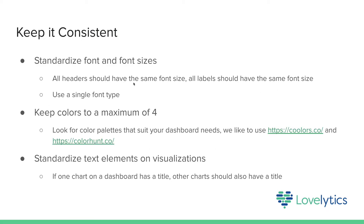Next, remember to keep it consistent. Make sure to standardize font sizes across headers and labels, and keep the number of font types to a minimum. On our dashboard, we made sure our headers are all in the same format, and any explainer text also displays the same way. When it comes to colors, keep them to a maximum of four — there are great tools that provide beautiful color palettes, so definitely utilize them. On our dashboard, we use blues and greens to highlight the information. Finally, standardize your text elements: if you use titles, make sure all your charts have them. These small changes can really elevate the overall look and user experience of your dashboards.